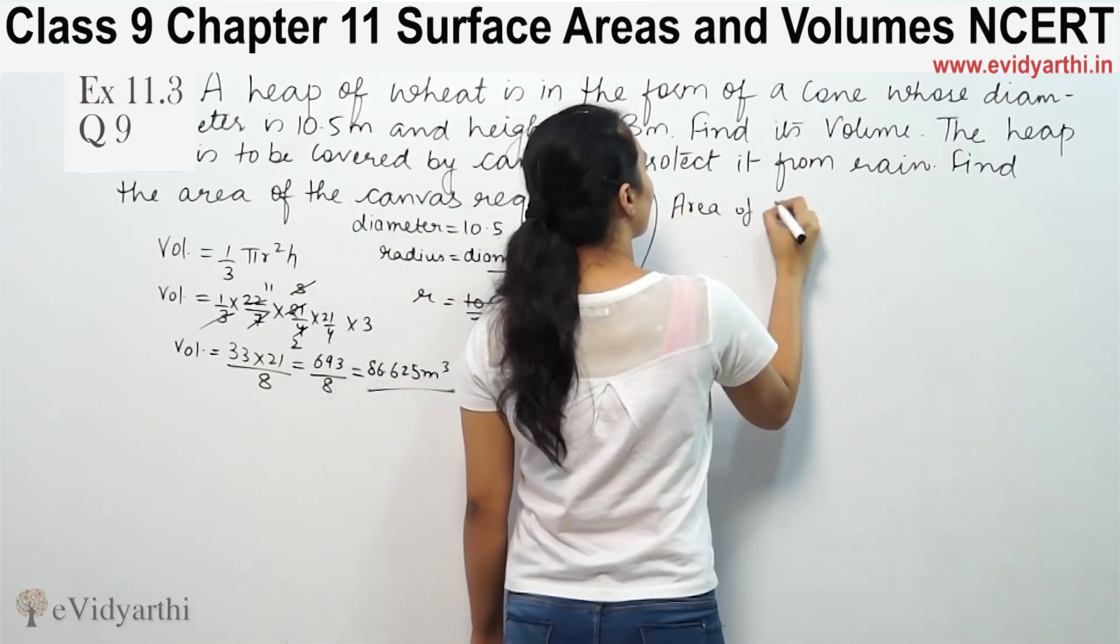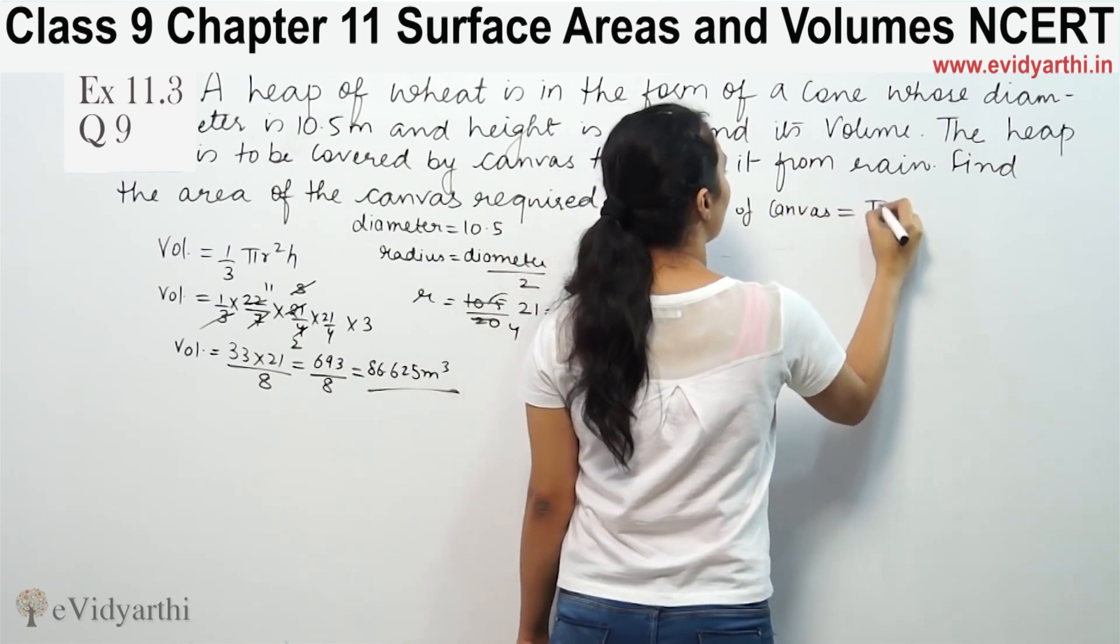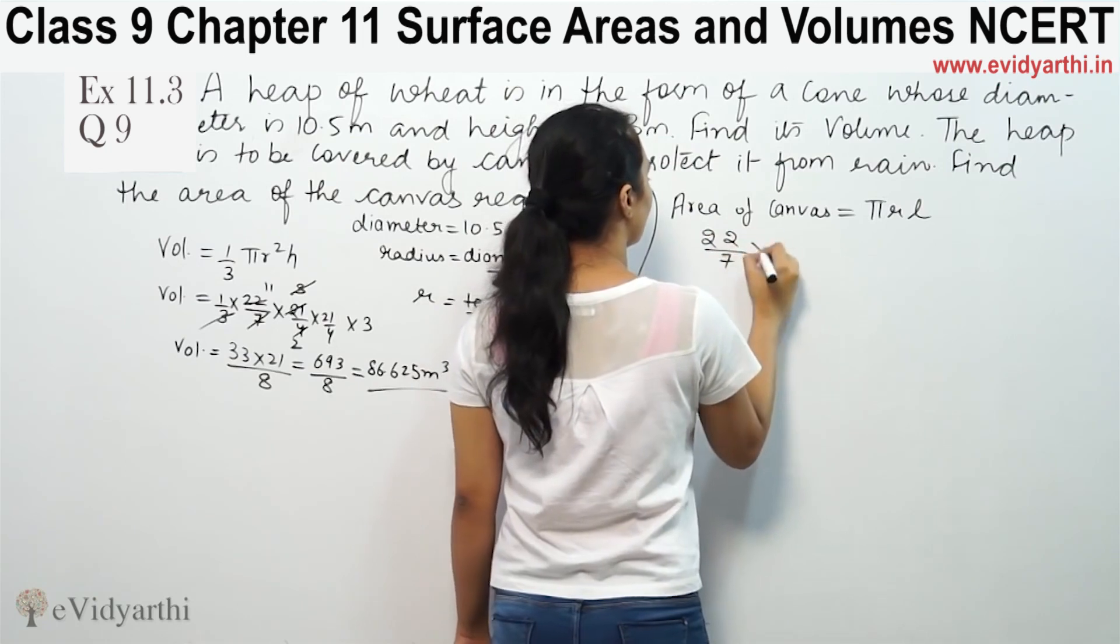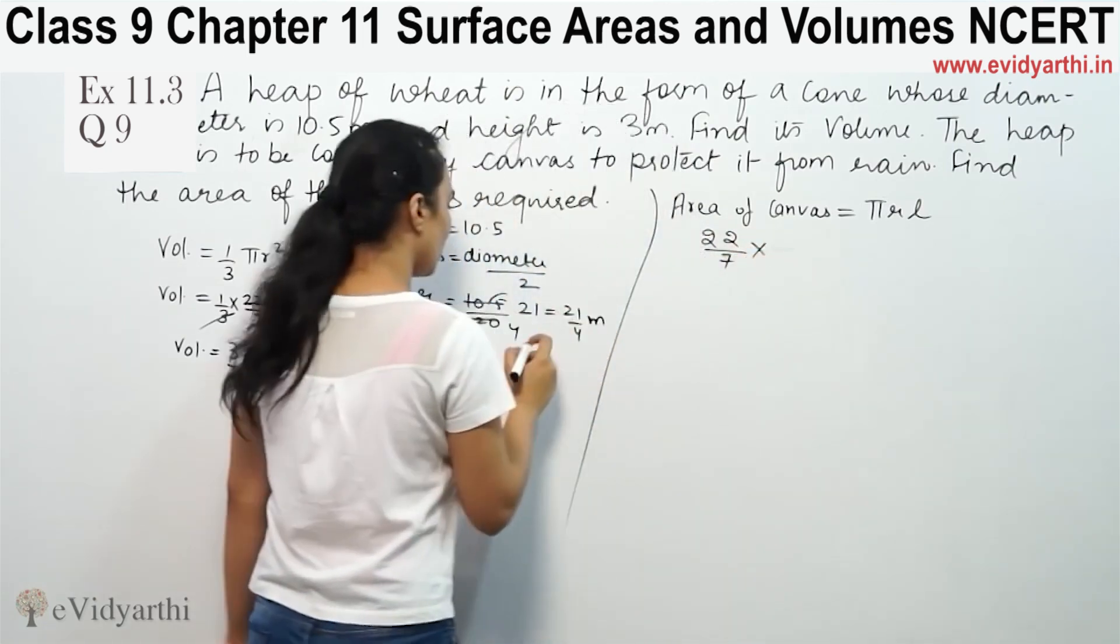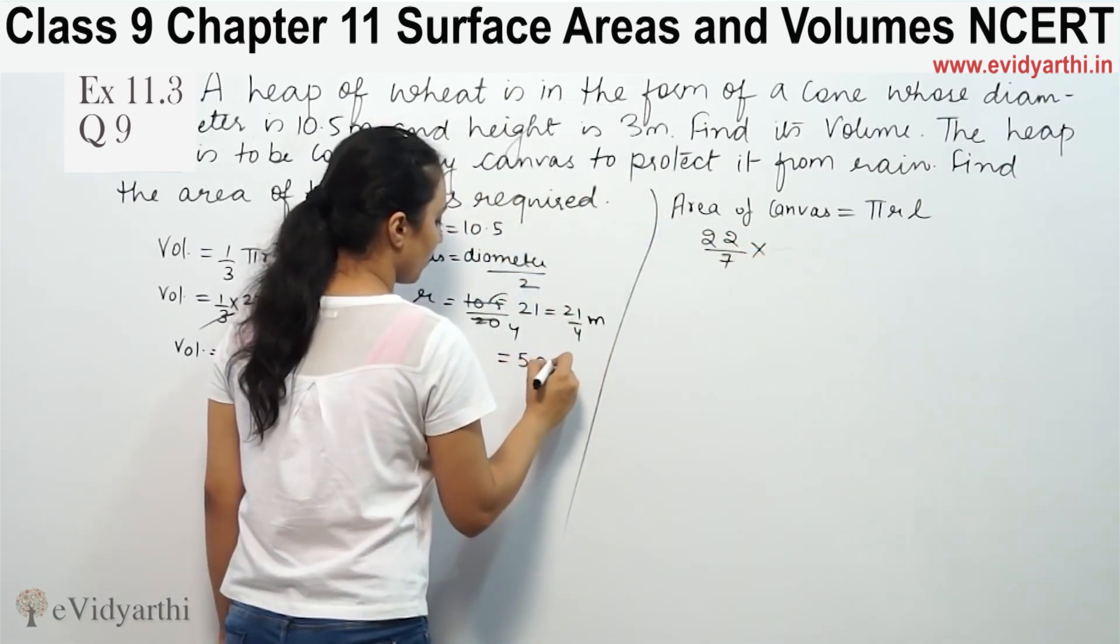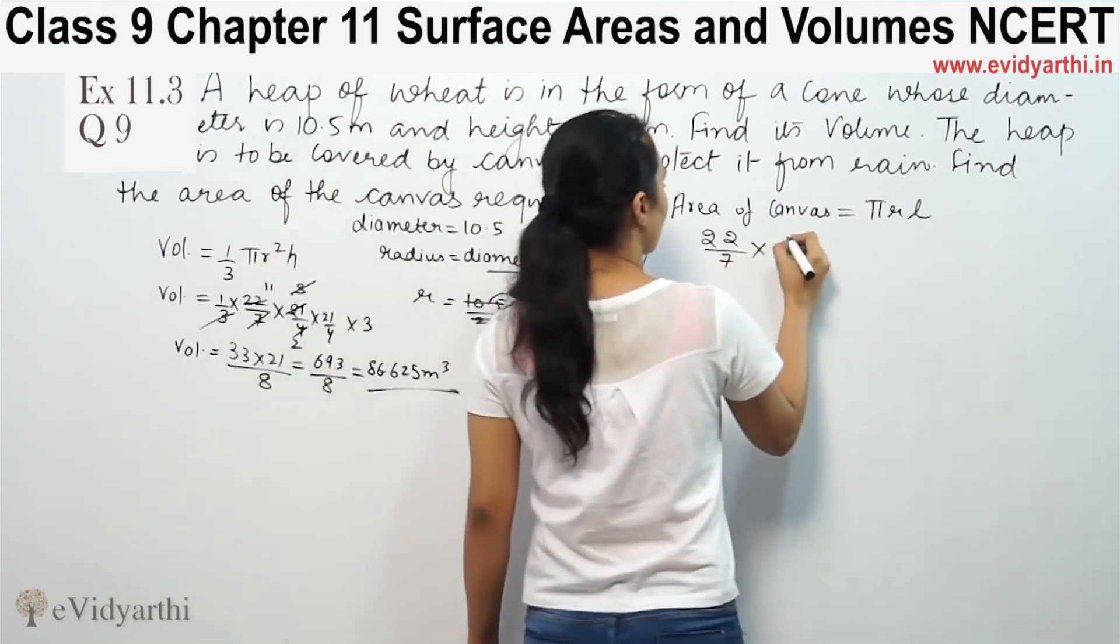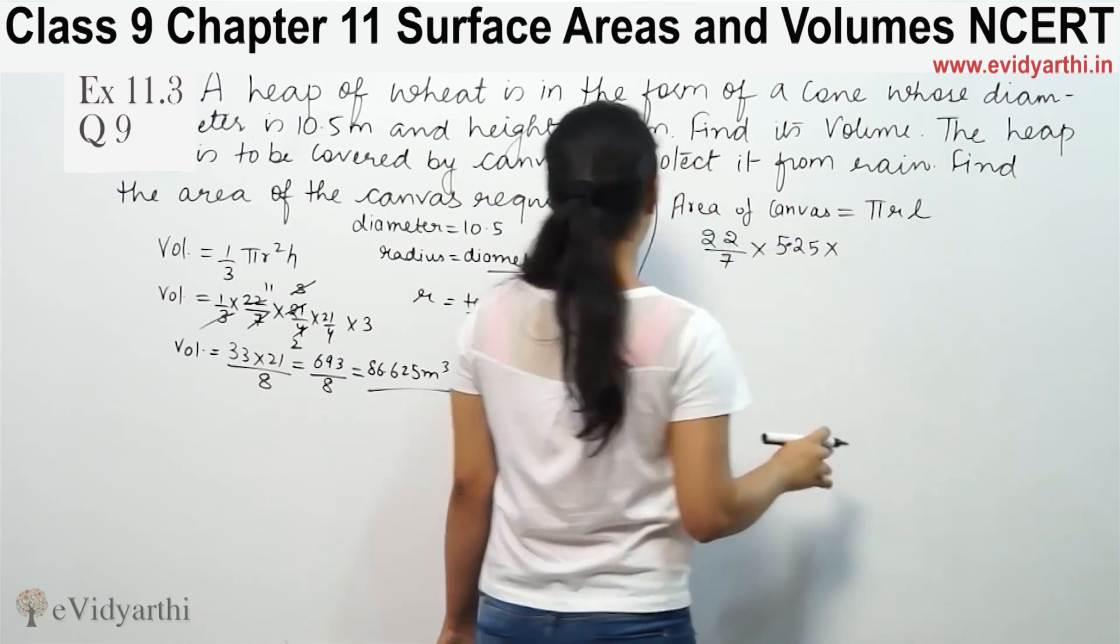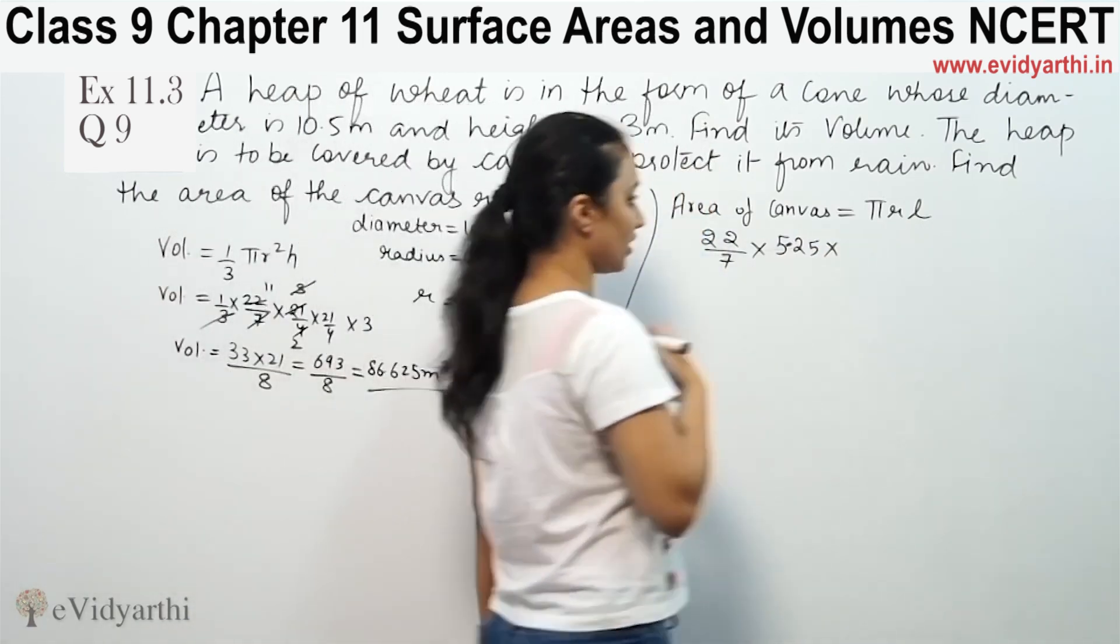Area of canvas will be equal to π r L. That means 22/7 into radius, which is 21 by 4, or 5.25 meters, times L. L means slant height.